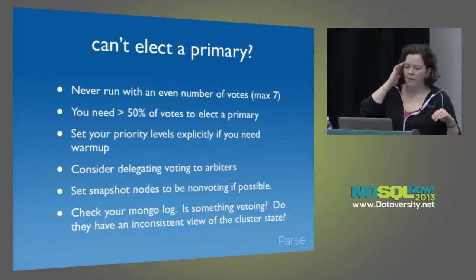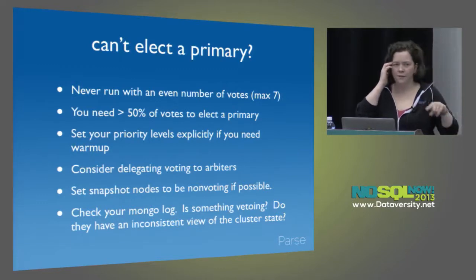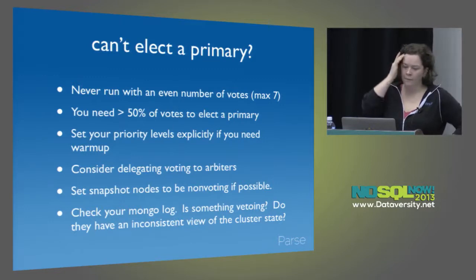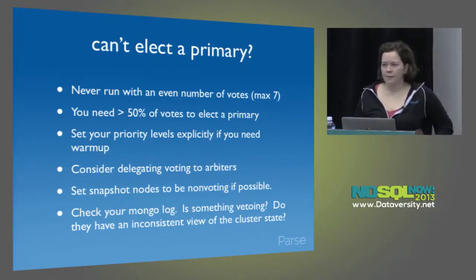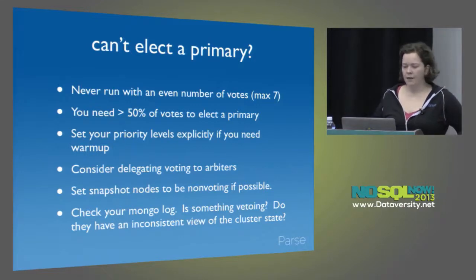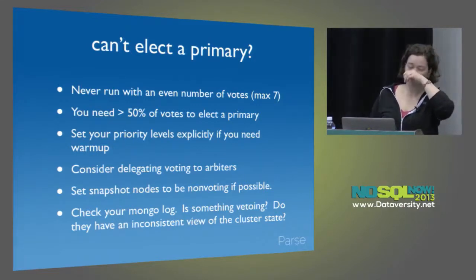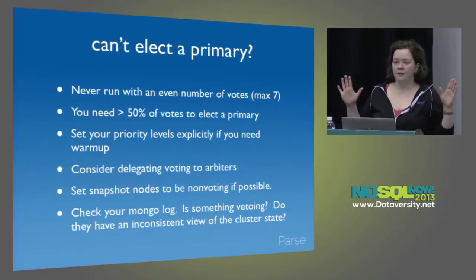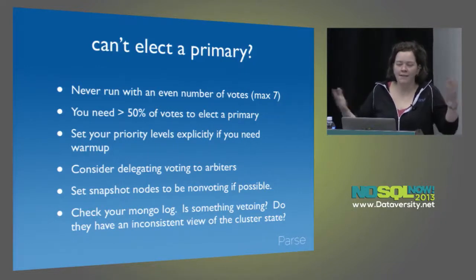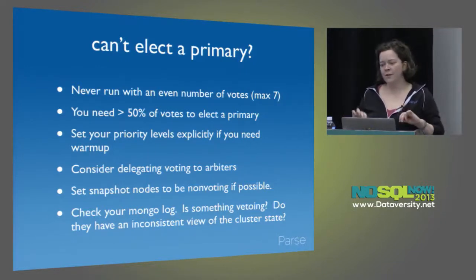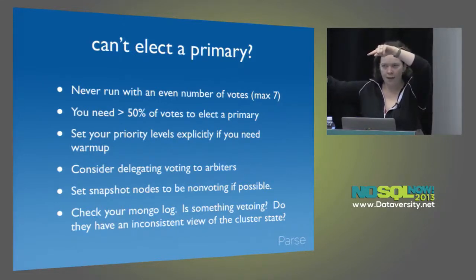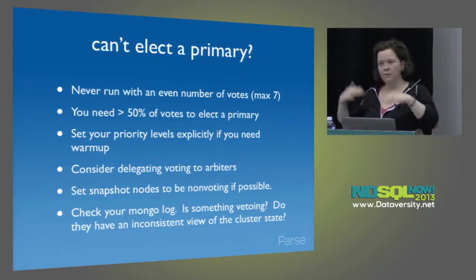I like to set my priority levels explicitly because I like to know exactly which node is going to get re-elected if something happens to the current primary, so I can keep it warmed up. I can't recommend enough adding arbiters. We had a number of bugs that caused our secondaries to all crash at once. We eventually just decided we're not going to rely on our secondaries to vote. We have enough votes in each cluster with two arbiters and a primary — so even if all the secondaries die, we can still elect a master and keep serving traffic.